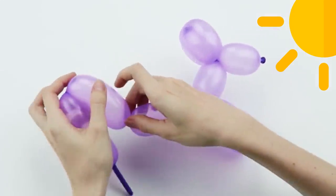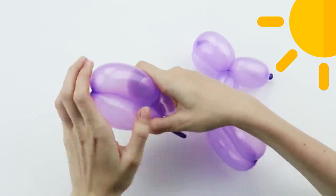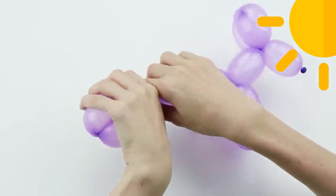Twist the back legs together. Fold the balloon at the twist between the 2 back leg segments. Grasp the segments and twist them 3 times at the base of the body segment.